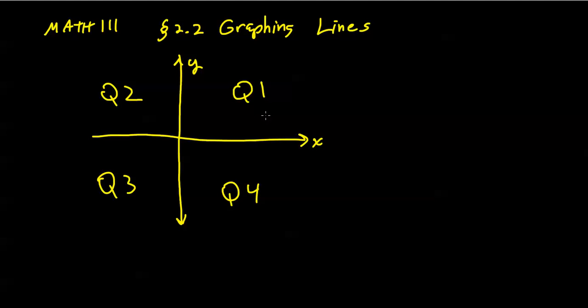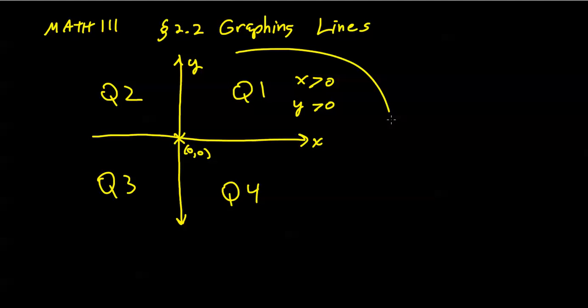The xy axes break up the coordinate plane into four quadrants, labeled Q1, Q2, Q3, and Q4. The intersection of the xy coordinates is referred to as the origin. In the first quadrant, x values are positive and y values are positive — x is positive because you're right of zero on the x-axis, and y is positive because you are above the x-axis.